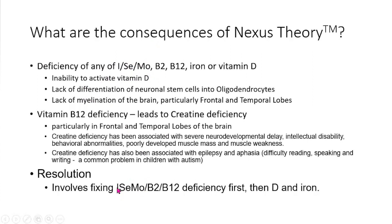Iodine is used to make thyroid hormone. Selenium is used in the conversion of thyroid hormone T4 to T3, so you need selenium there. And molybdenum is the final step in converting FMN to FAD. So you need all three of these to activate vitamin B2 — that's iodine, selenium, and molybdenum.